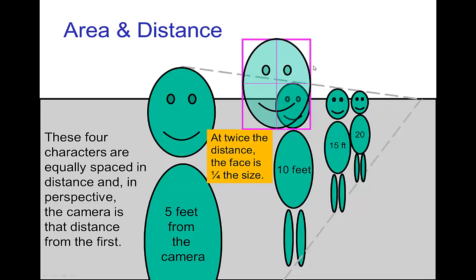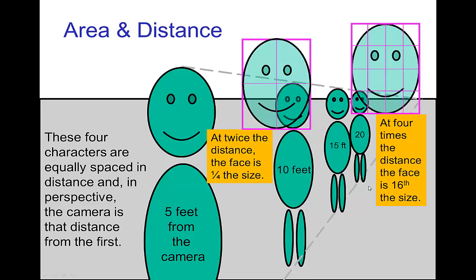You can immediately see just from geometry that the character who is twice as far from the camera, their face is actually one quarter the area. And the one that is four times as far away from the camera as the closest one, their size is sixteen times smaller. So this quadratic decrease is the same thing that we see with the decreasing intensity of the point light source.